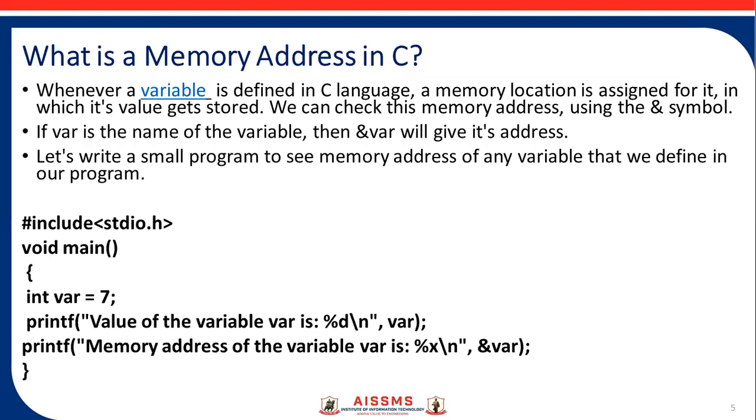What is a memory address in C? Whenever a variable is defined in C, a memory location is assigned for it, in which its value gets stored. We can check this memory address using the & symbol. If var is the name of the variable, then &var will give its address.